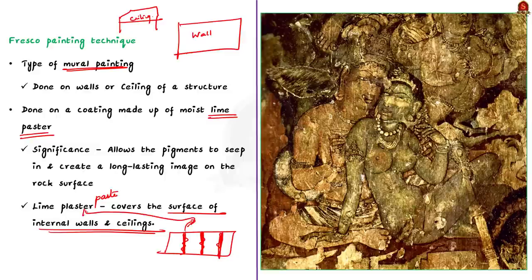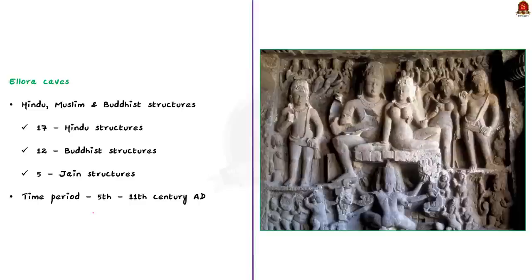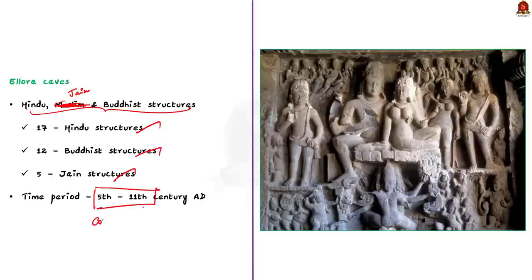Now moving on to Ellora Caves — unlike Ajanta, which was predominantly an exclusive Buddhist cave, Ellora Caves houses rock-cut structures of all three major religions of ancient India. It houses 17 Hindu structures, 12 Buddhist structures, and 5 dedicated to Jain religion. The rock-cut structures inside Ellora Caves were built between the 5th and 11th century AD, making Ellora structures newer than Ajanta Caves.